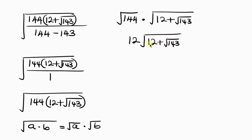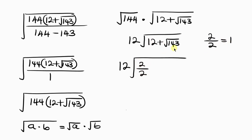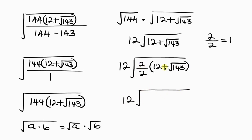My aim is to make what I have inside a perfect square in order to get rid of this square root. I'm going to use 2 divided by 2, which equals 1, to multiply this expression: 12 plus the square root of 143. Multiplying the numerator: 2 times 12 is 24, plus 2 times the square root of 143 is 2 root 143, all over the denominator, which is 2.